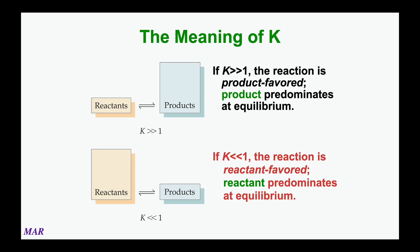The actual number associated with K will tell you if the reaction has more products or more reactants. If your numeric value of K is larger than one, that means you have a product-favored equilibrium, and at equilibrium you're going to end up with more products than reactants. On the other hand, if your K value is less than one, that means you're going to have a reactant-favored equilibrium, and at equilibrium you'll end up with more reactants than products.